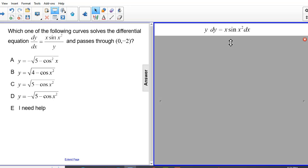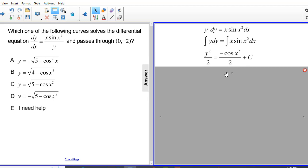Step 2. Integrate each side, adding the constant c to only one side of the equation. So integrating both the left and right side of the equation, we get y squared over 2 equals negative cosine x squared over 2 plus c.